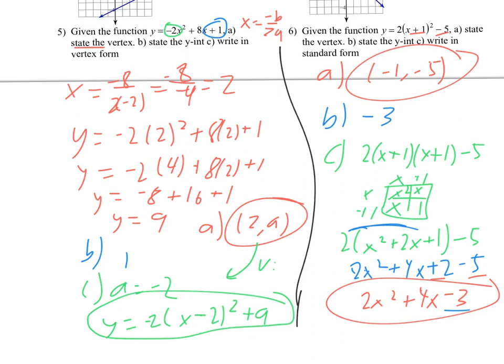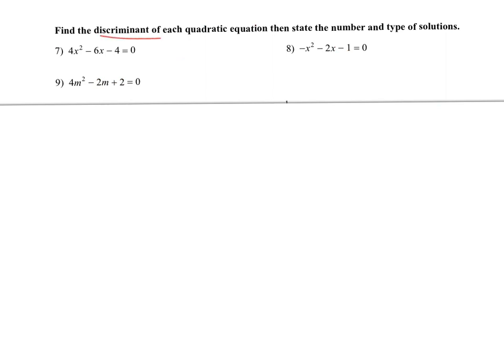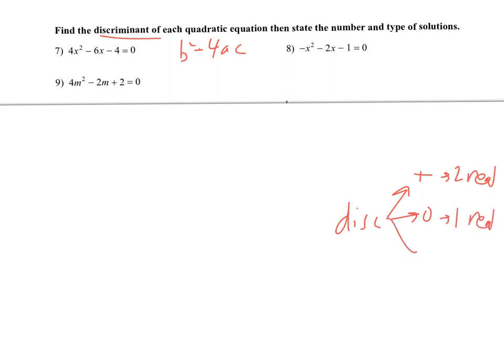Alternatively, for the y-intercept, we could have plugged in 0 for x and done the PEMDAS. Next up, we're going to find the discriminant, and that is b squared minus 4ac — it's really the inside of the radical in the quadratic formula. Once we get that result: if the discriminant is positive, that means two real solutions; if it is 0, that means one real solution; and if the discriminant is negative, that means no real solutions, which they put as two imaginary solutions.